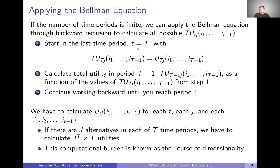We start with the last period because in the last period there are no future periods to think about, so total utility in the final time period just equals utility in the final time period. Once we know total utility in the final period, we can calculate total utility in period T minus one, since now we know what the future looks like. Then we use the Bellman equation to work backwards: once we know T minus one, we can think about T minus two, then T minus three, and so on.